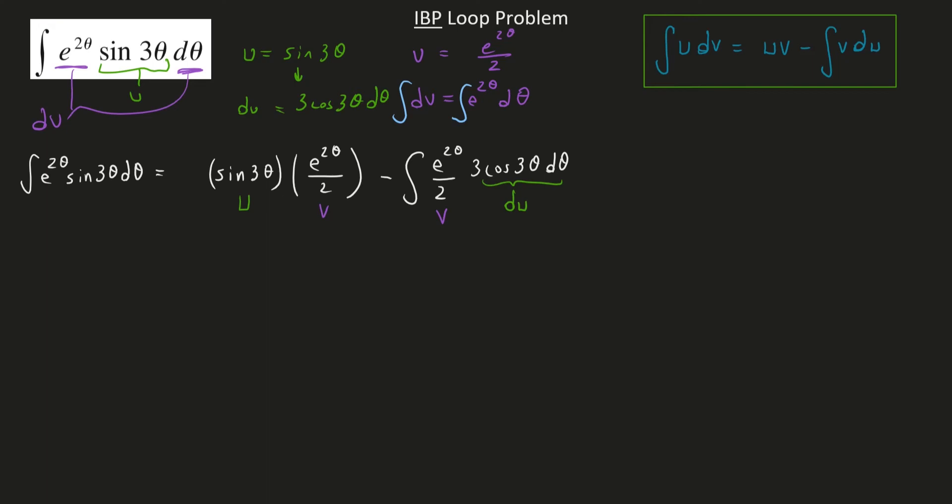So usually, we're hoping and praying that the second integral will be easier. That's really the whole approach when it comes to integration by parts. But as you can see, it definitely doesn't look that easier. We still have an e, and we still have a trig term, we have a cosine.